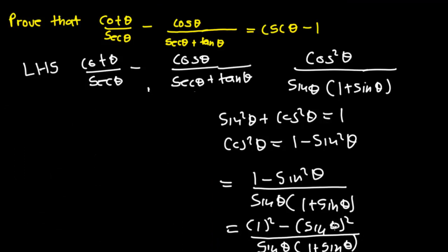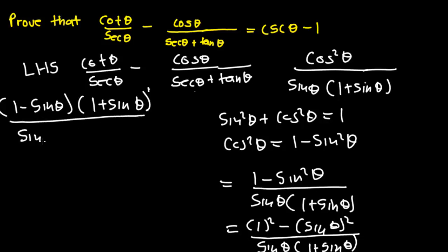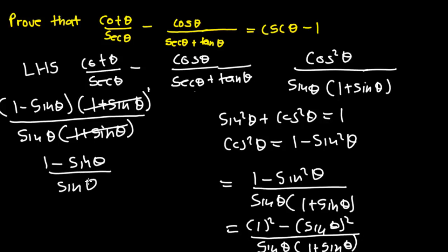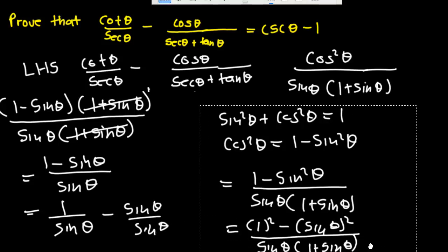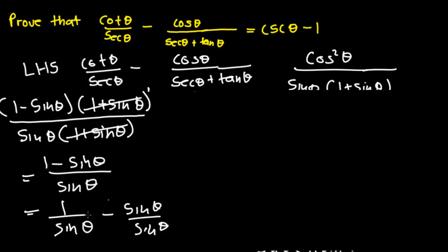From the numerator we have a difference of two squares, so we rewrite the numerator as 1 minus sine theta times 1 plus sine theta, all over sine theta multiplied by 1 plus sine theta. The 1 plus sine theta cancels, leaving 1 minus sine theta all over sine theta. We can rewrite this as 1 over sine theta minus sine theta over sine theta, which gives cosec theta minus 1.